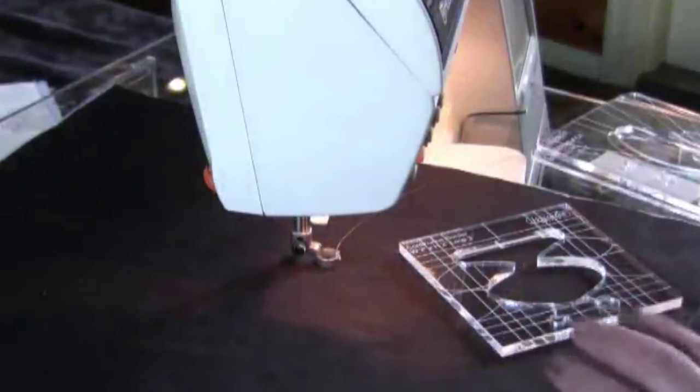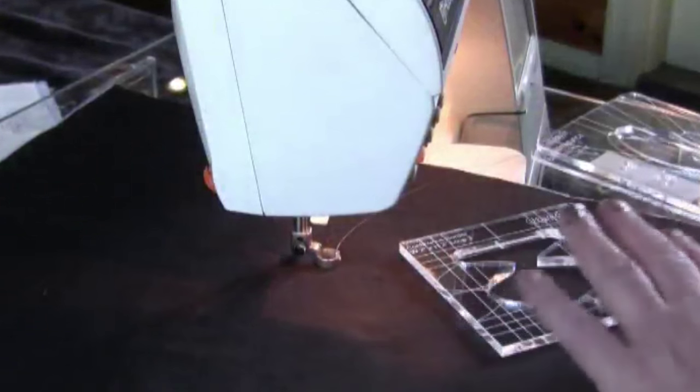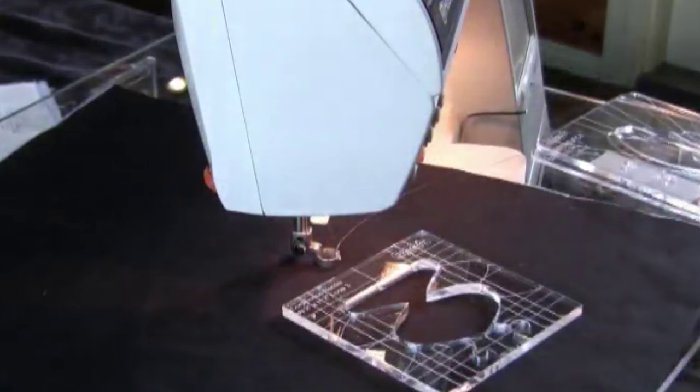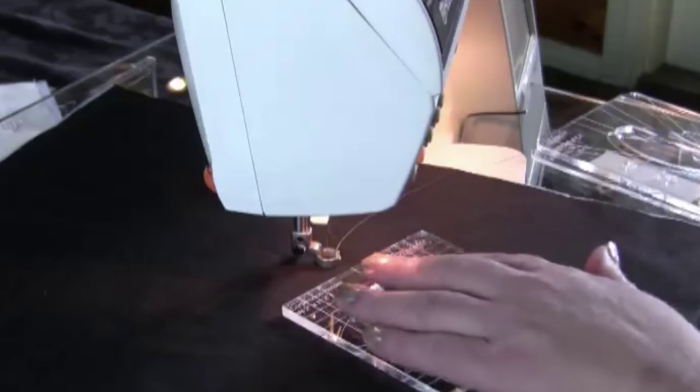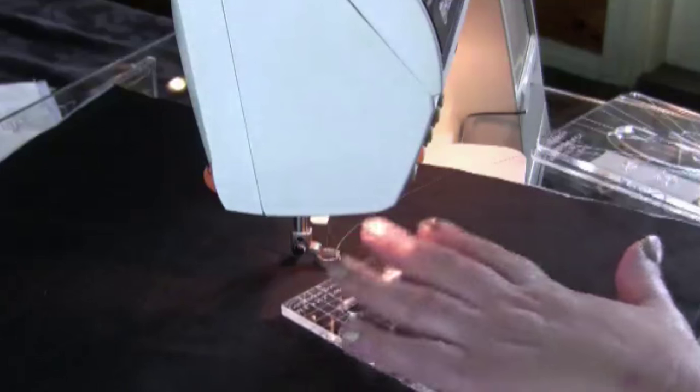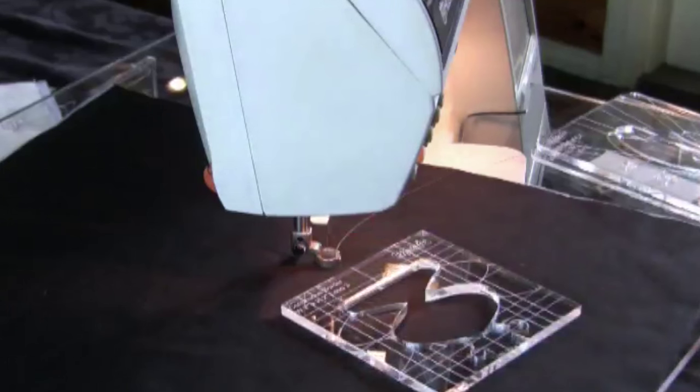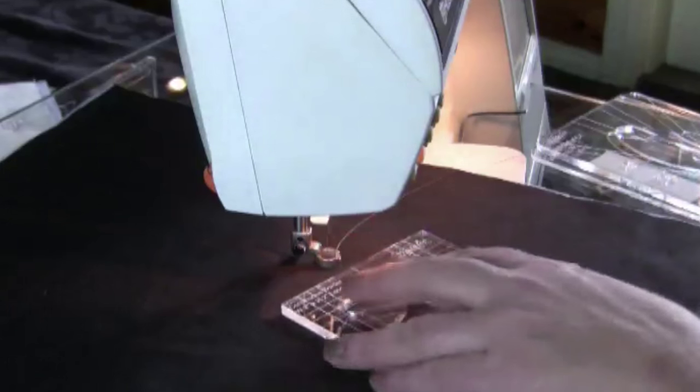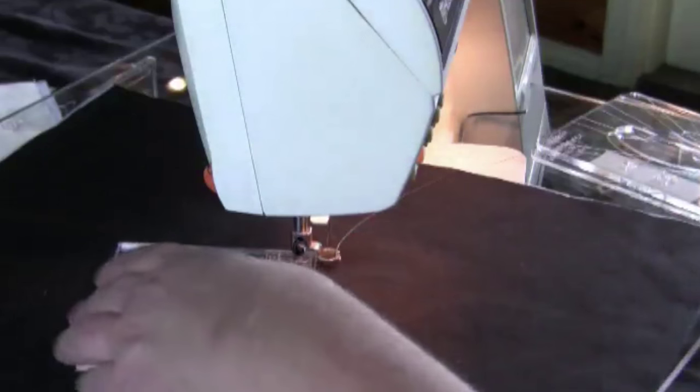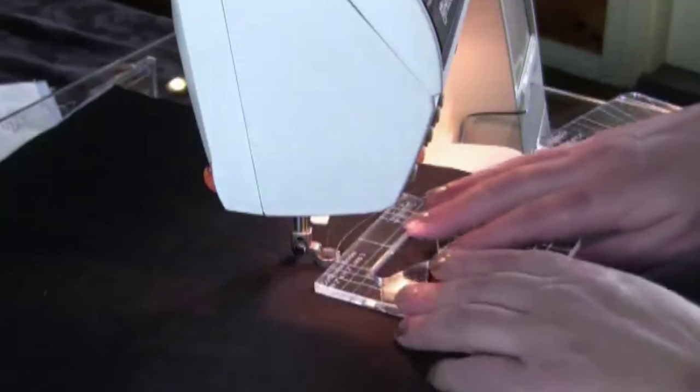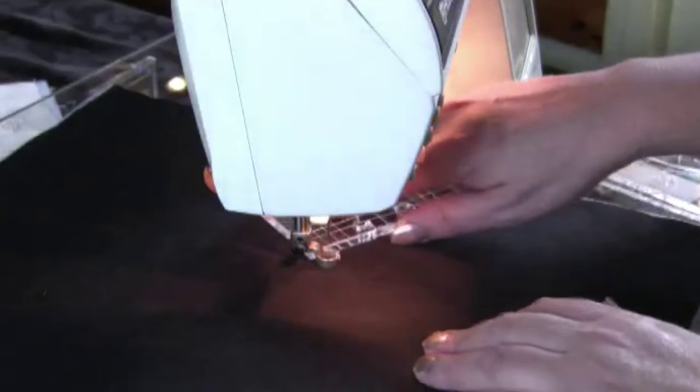A little bit of information about templates. Traditionally, our templates have been made in 6mm or quarter inch acrylic. And when we use them on a domestic machine, whether it is a high shank or a low shank, 6mm acrylic will not go around the back of the machine. I can use them to the front, but I can't use them behind.